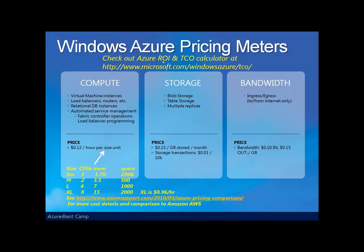What does Windows Azure cost? For a complete picture, take a look at the Azure Return on Investment and Total Cost of Ownership calculator located at the URL on the screen. For some ballparks: compute — those virtual machines that run your worker and web roles — the smallest virtual machines, with one CPU and 1.7 gigabytes of memory, cost 12 cents an hour. When you move up to an extra large instance, we're talking about 96 cents an hour. Based on the size of the virtual machine instance you need, the costs are linear.